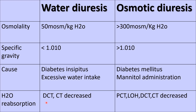In water diuresis, water reabsorption in the proximal convoluted tubule and loop of Henle is normal. Only the distal convoluted tubule and collecting duct reabsorption decreases due to absent ADH. ADH plays an important role in the distal convoluted tubule and collecting duct for water reabsorption. In osmotic diuresis, however, water reabsorption is entirely decreased — despite normal ADH — in the proximal convoluted tubule, loop of Henle, distal convoluted tubule, and collecting ducts.